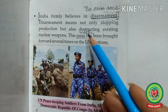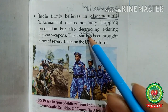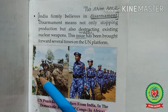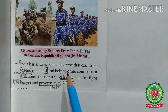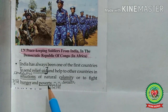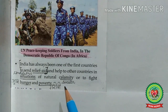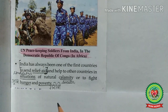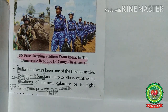India firmly believes in disarmament — not only stopping production but also destroying existing nuclear weapons. This issue has been brought forward several times on the UN platform to maintain peace in the world. India has always been one of the first countries to send relief aid and help to other countries in situations of natural calamity or to fight hunger and poverty. India provides both monetary and non-monetary help — such as supplies and manpower for rescue missions.